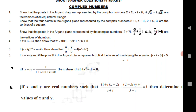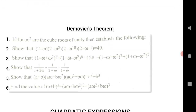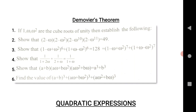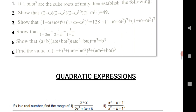The next chapter is De Moivre's Theorem, which is only for TS students, not for AP students — this is for four marks for TS students. The first question: if 1, ω, ω² are the cube roots of unity, establish the following: (2 − ω)(2 − ω²)(2 − ω¹⁰)(2 − ω¹¹) = 49. The second question is LHS equals RHS. There are five questions total in this chapter — practice these to get one question from De Moivre's Theorem.